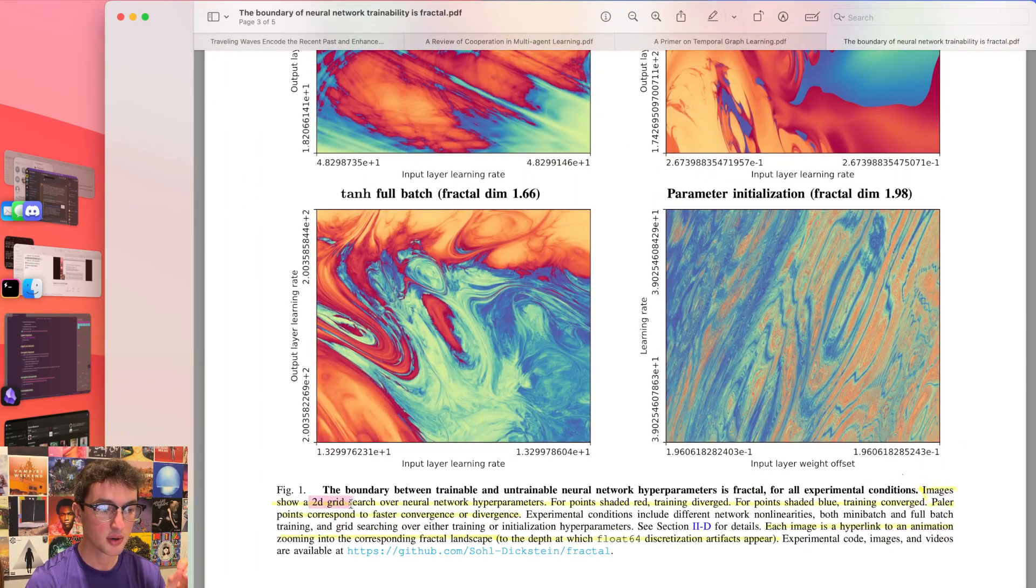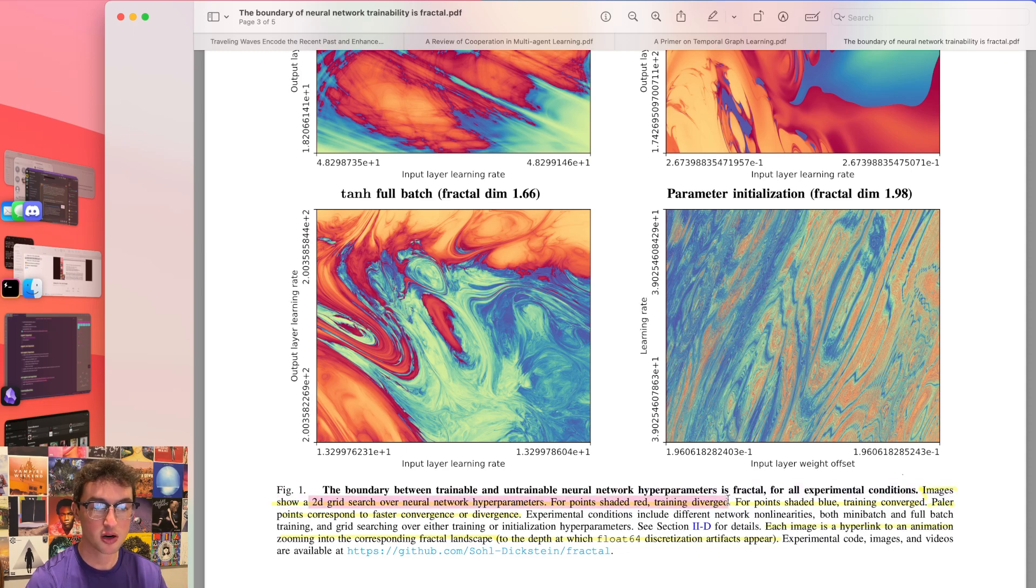Basically here, what do we have? We have output layer learning rates on the y-axis and we have input layer learning rate on the x-axis, right? And then what does blue and red, what do blue and red mean? Which one is which? For point shaded in red, training diverged, as in did not work, it did not actually succeed. For point shaded in blue, training converged. Paler points correspond to faster convergence or divergence.